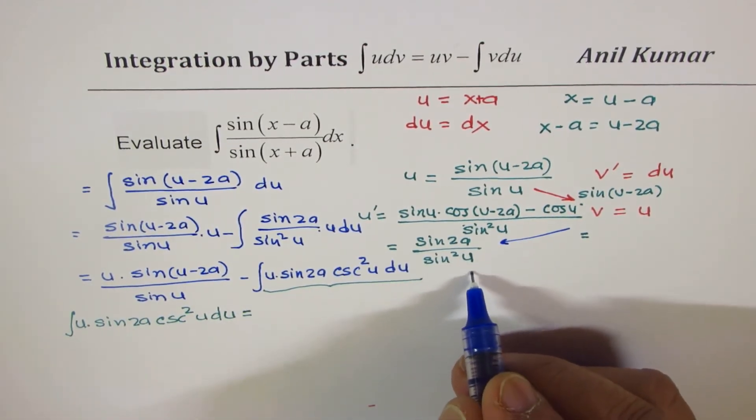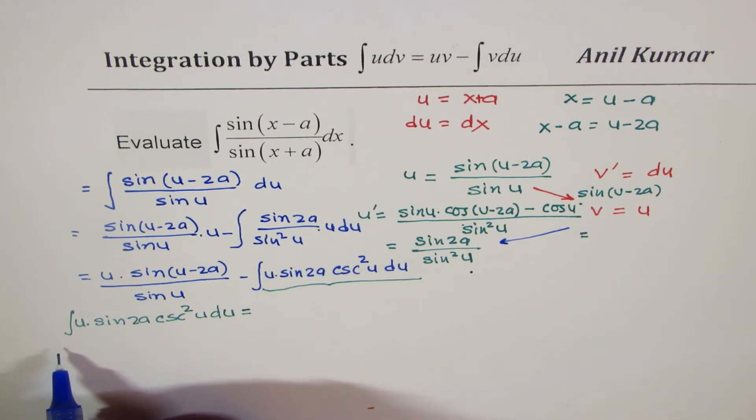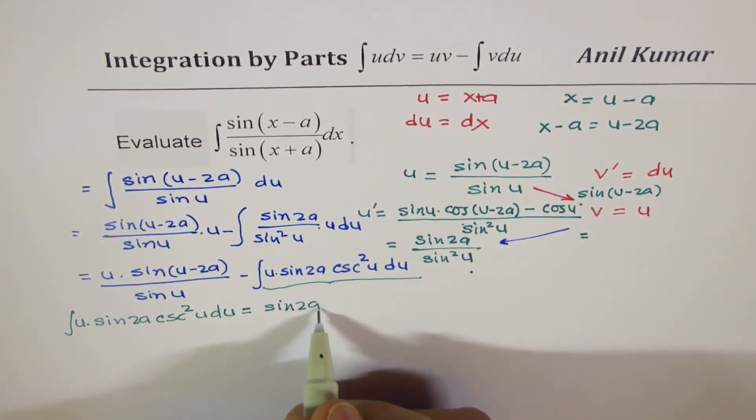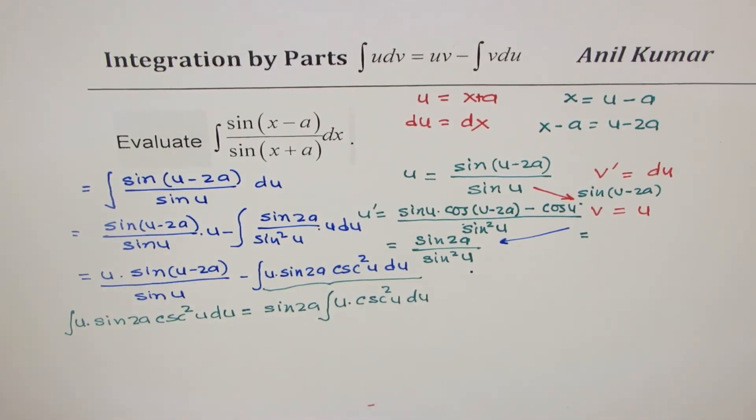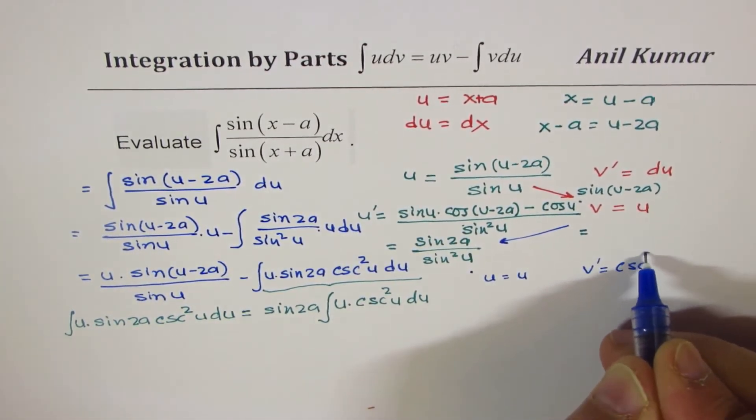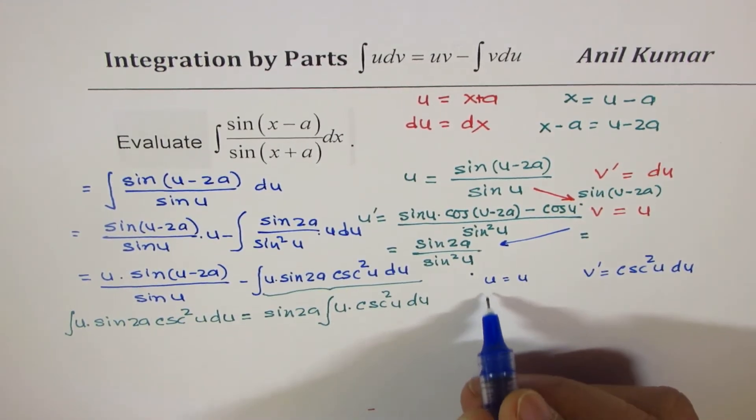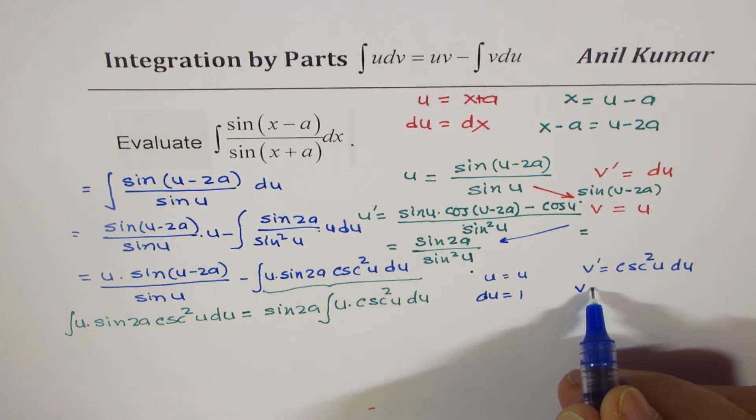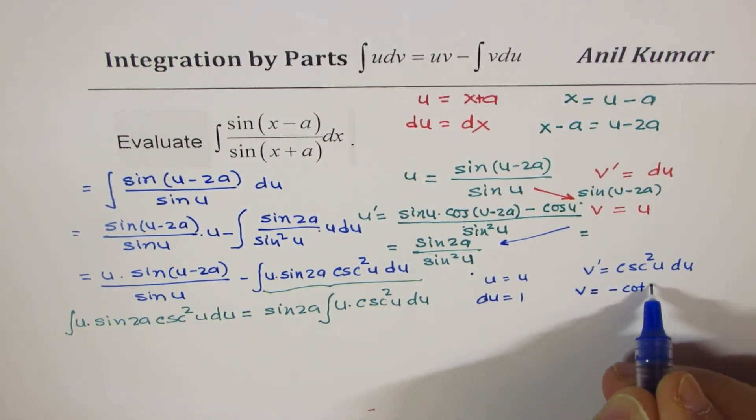So we can write here as integral of u·sin(2a)·csc²(u) du. In this particular thing, we'll again select u and v and do the similar operation, integration by parts once again. Now sin(2a) is a constant, so I could have taken it outside. So we'll write this as sin(2a) times the integral of u·csc²(u) du. We'll take u as u, and we'll take v' as csc²(u) du. Now the derivative of u is 1, so du is 1. And the integral for this, that is v, is equal to -cot(u).